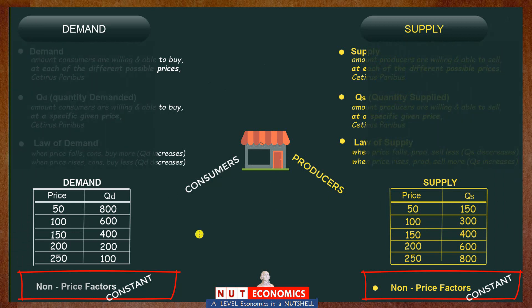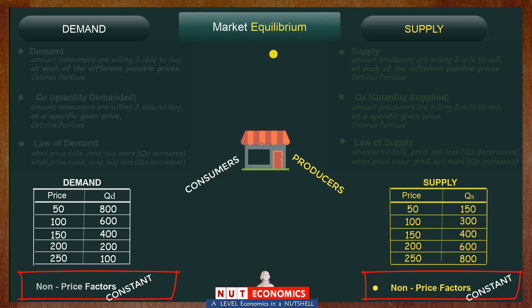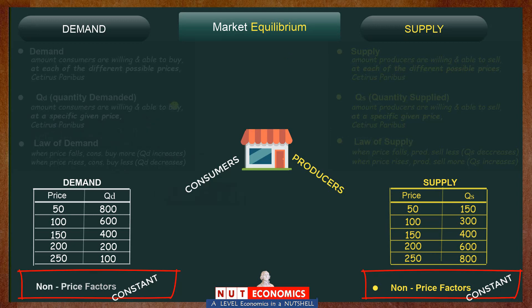Once we have demand and supply, we can bring them together and understand how this model explains the working of the free market — how regardless of what price you start with, consumers and producers will always come to a point where there is no shortage and no surplus. This is how you will express your answers in essay questions about how the free market works and how price and quantity are determined.